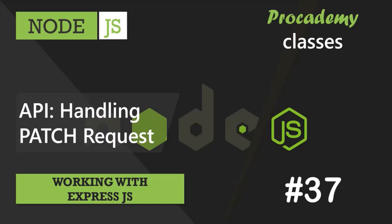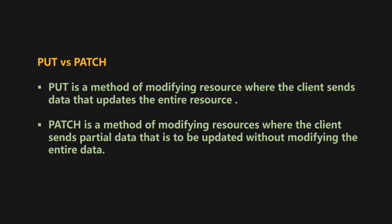So far, we have learned how to handle GET and POST requests using Express.js. Now in this lecture, let's learn how to update an existing resource on the server using Express. To update a resource on the server, we have two HTTP methods: PATCH and PUT.